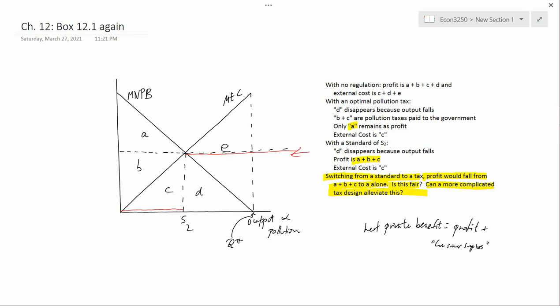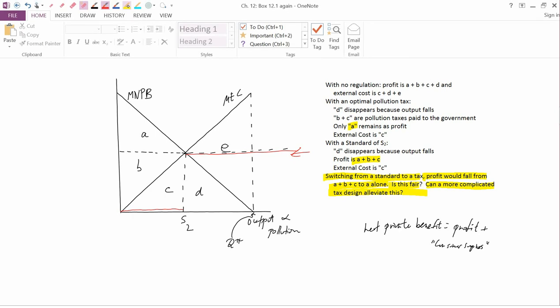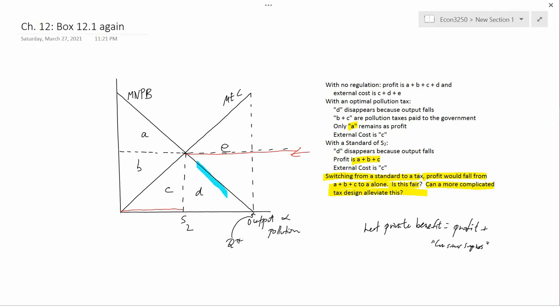It turns out that for the same reasons we said before, the firm is not going to want to produce more than s2, because the amounts more than s2 only benefit the firm by MPB, but they cost the firm along the red line, and the firm doesn't want to pay that. It's not worth it. So this so-called non-linear tax is another way to get the firm to produce s2, and firms would like it a lot better because under this non-linear tax the firms get to keep b plus c.